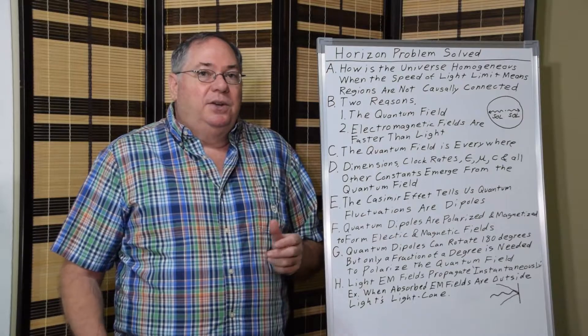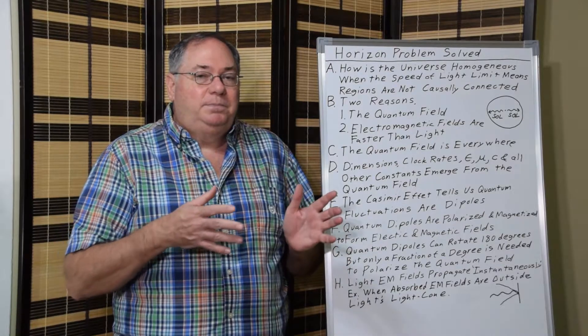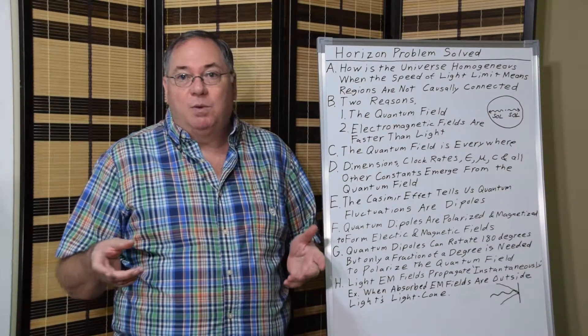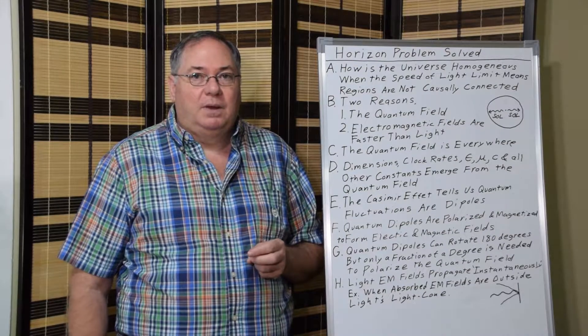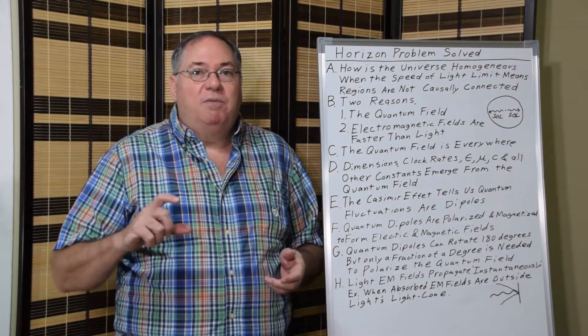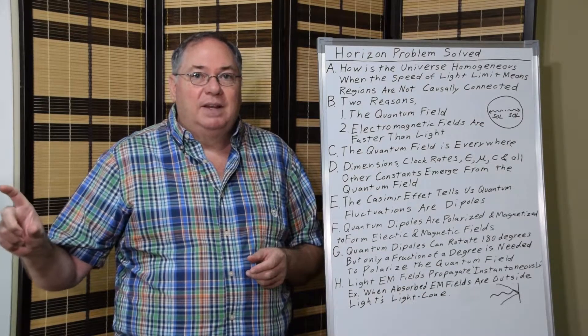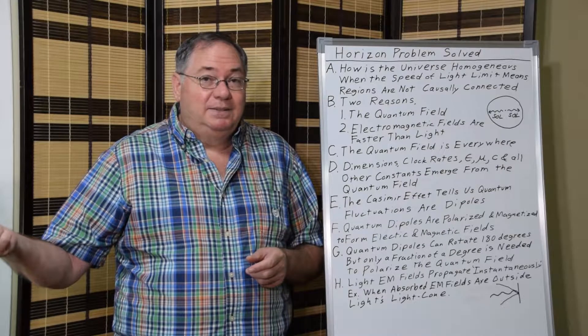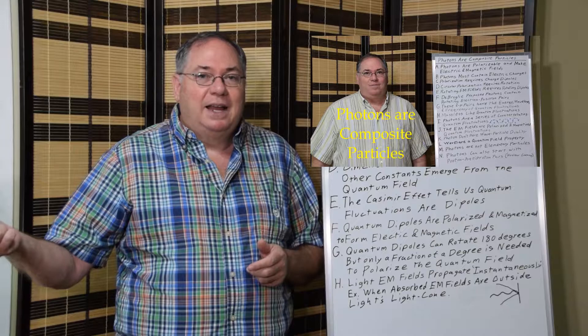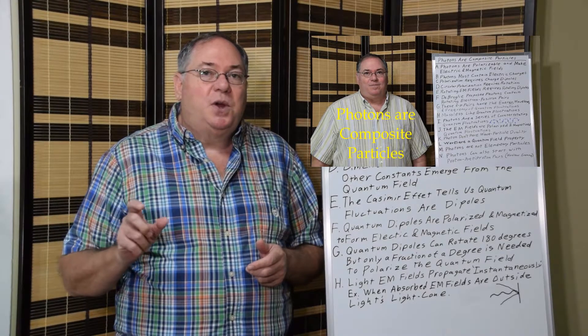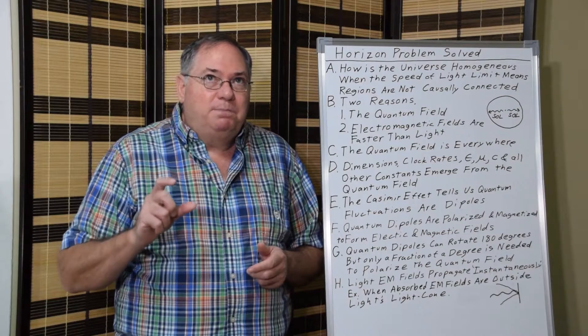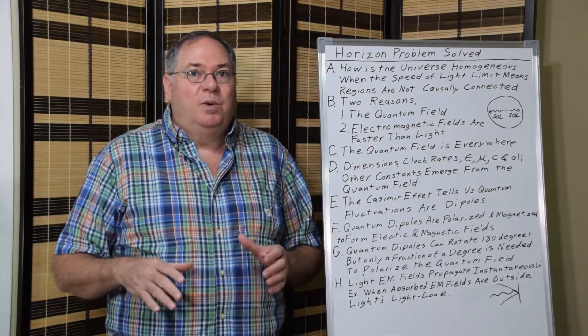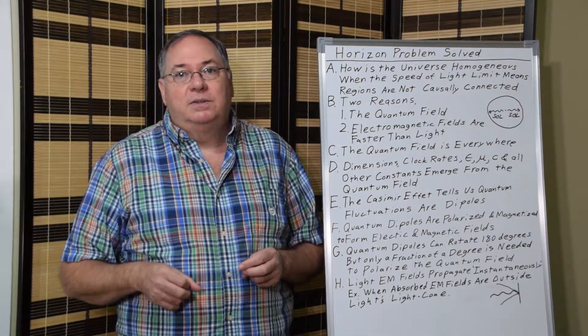Now going back to the speed of light limit. Because of the Casimir effect, no space is filled with quantum dipoles. These quantum dipoles can rotate 180 degrees during their life as they do when they are inside light. And I have another video on that. And so, but when light is polarized, it only has to polarize a fraction of a degree in order for a huge electric and magnetic field to form.